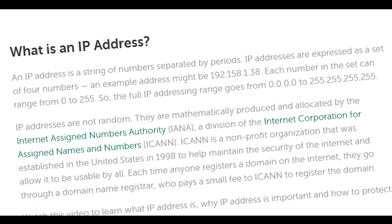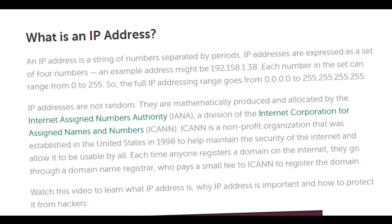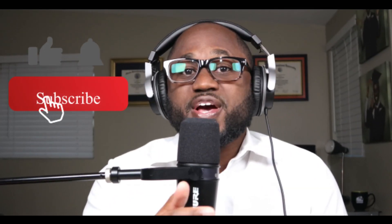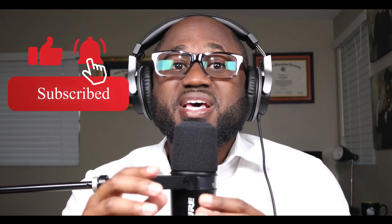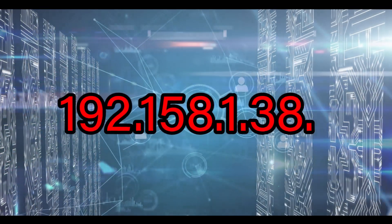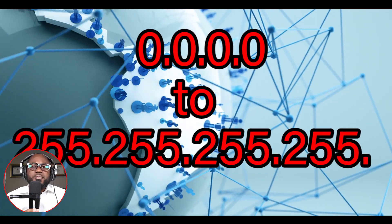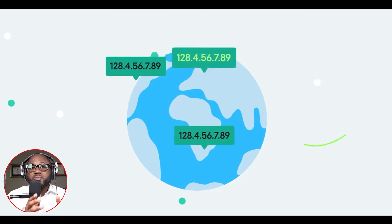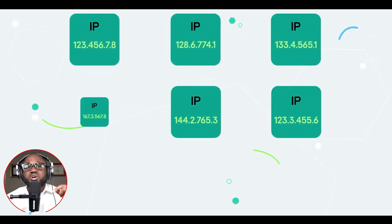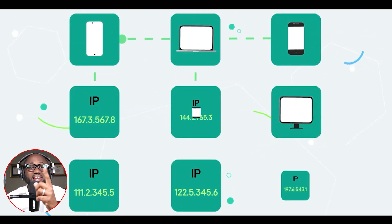Now, what is an IP address? An IP address is a string of numbers separated by periods. IP addresses are expressed as a set of four numbers. An example may be 192.158.1.38. Each number in the set can range from 0 to 255, so the full IP addressing range goes from 0.0.0.0 to 255.255.255.255. IP addresses are not random. They are mathematically produced and allocated by the Internet Assigned Numbers Authority, IANA, which is a division of the Internet Corporation for Assigned Names and Numbers, ICANN.